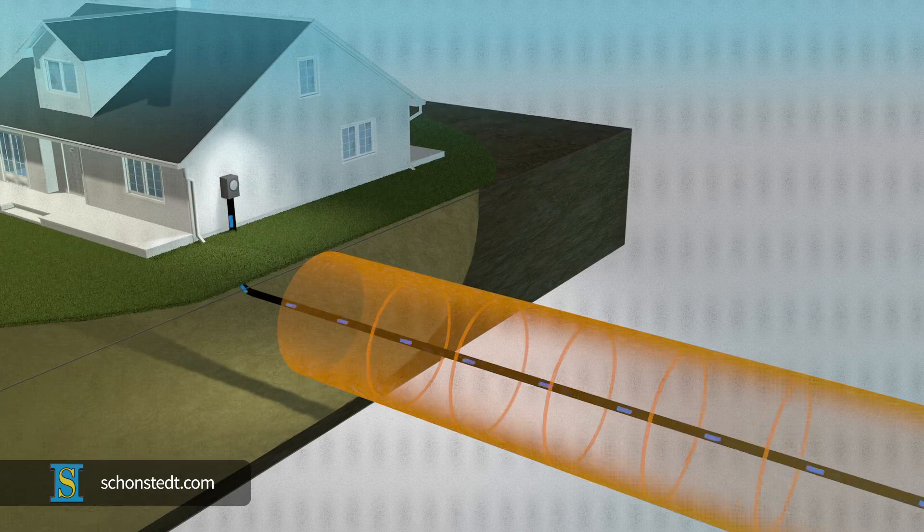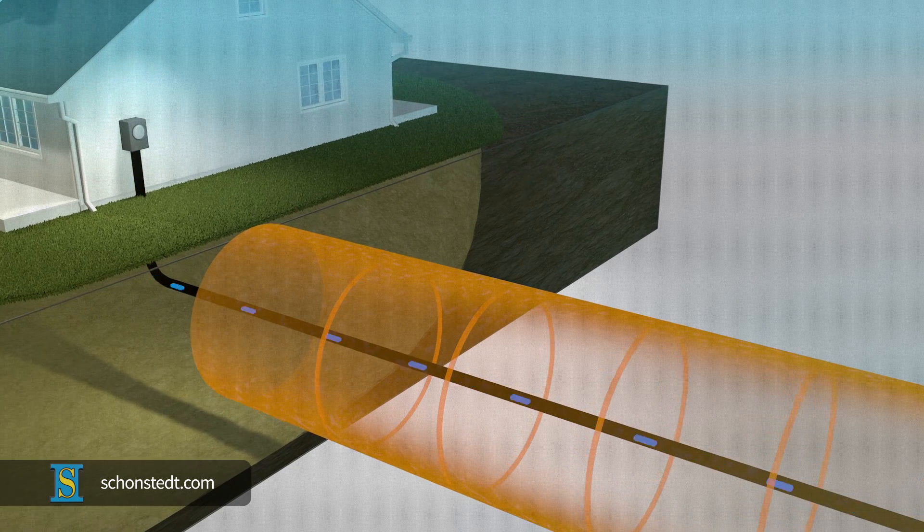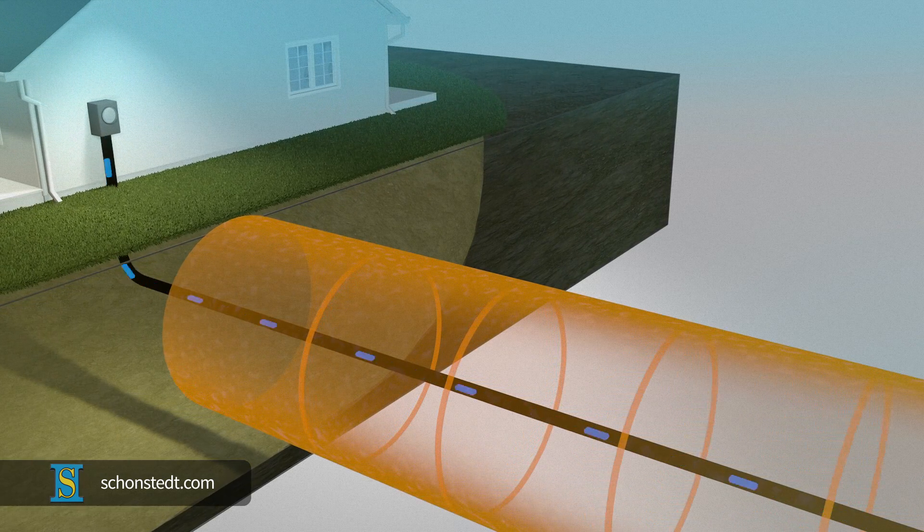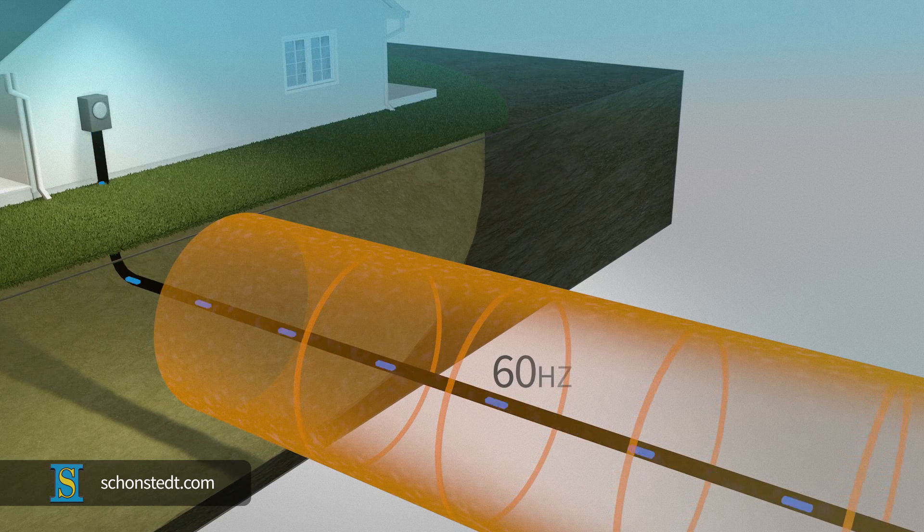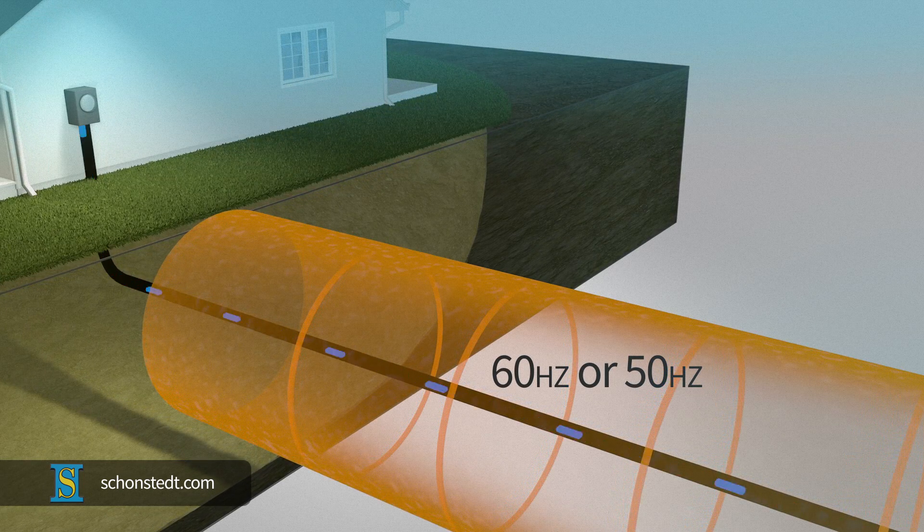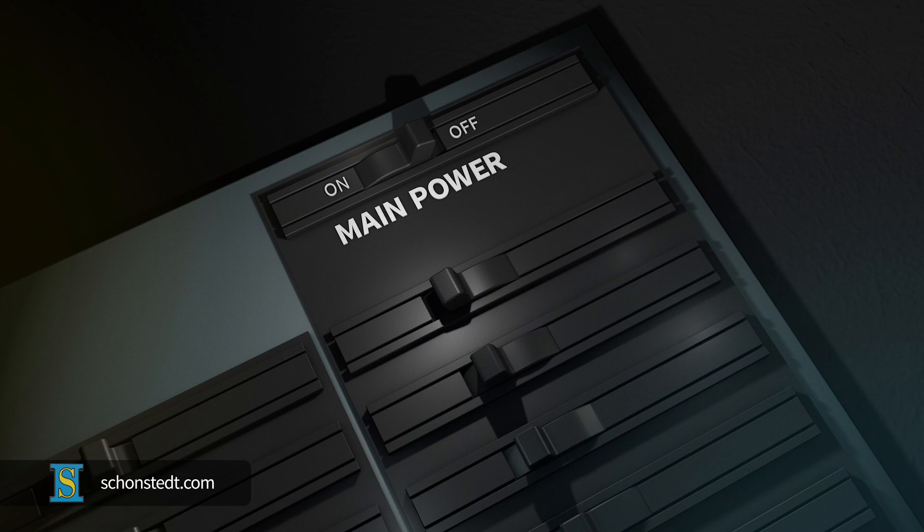Passive locating is the act of finding cables that already have a circulating current, such as buried power lines. The cable must be energized with a network distribution electrical current at a frequency of 60 or 50 Hz, depending on the part of the world in which you live. The passive method will not work if the power is off.